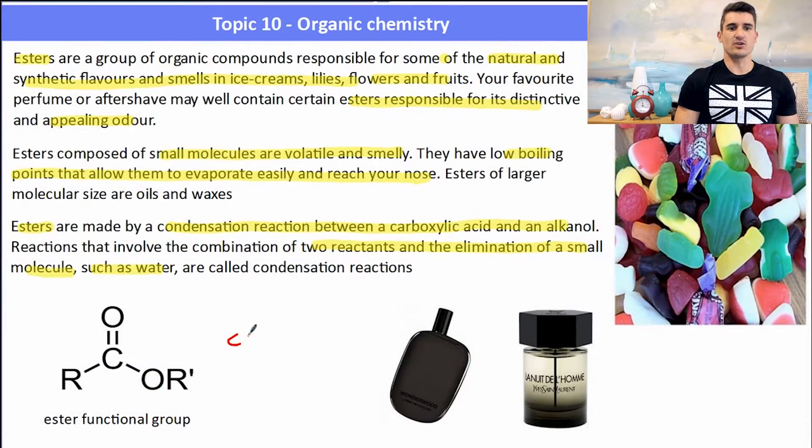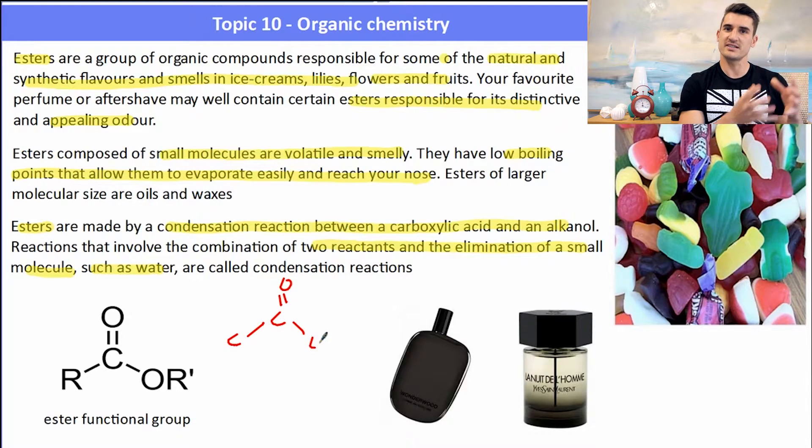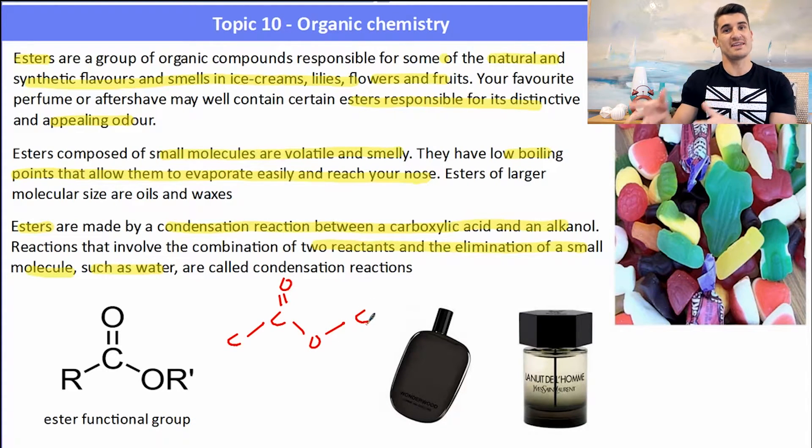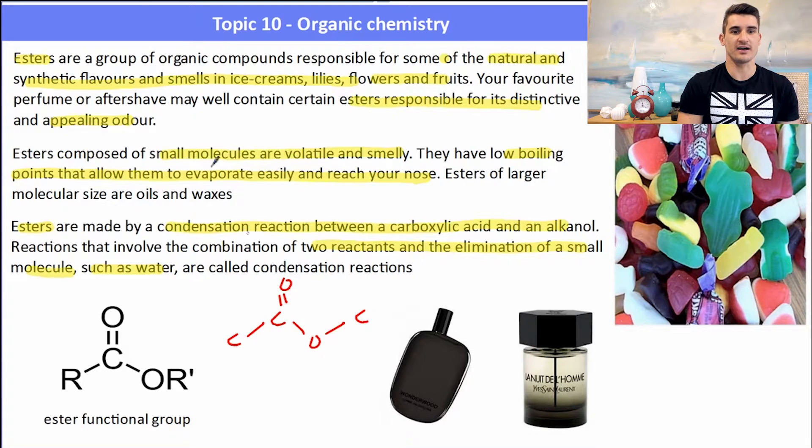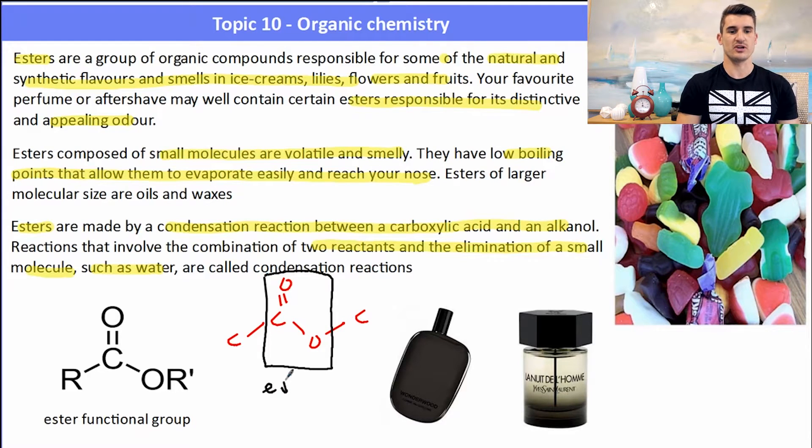Now esters all contain the ester functional group: a carbon double bonded to an oxygen and then a single bond to another oxygen. So this is described as the ester functional group and I've put a little box around it. Those esters are made from a carboxylic acid which contains the C double bond O and an alcohol which contains the CO functional group.